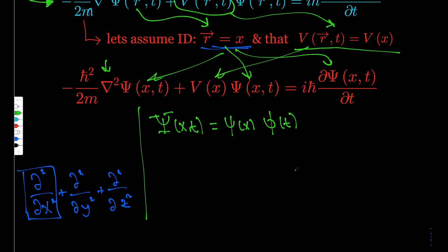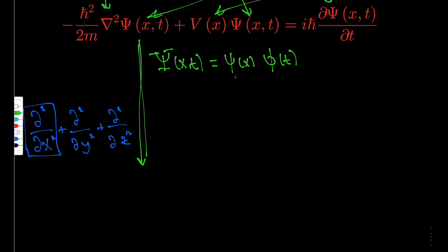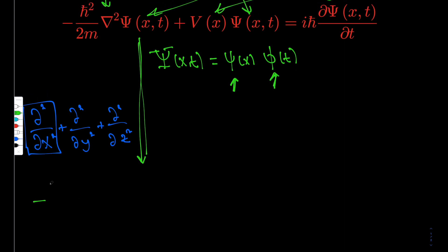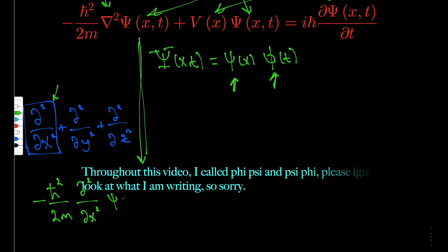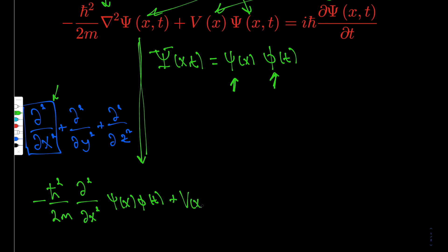Don't worry — I'm going to go very slowly on this. A lot of people who take this class have not done partial differential equations, and it's not so complicated; it will make sense. So I'm going to take this substitution, go down to the bottom, and substitute it in. I'll drop the function notation — psi is a function of x, phi is a function of t. So we have: minus h-bar squared over 2m, and since we only have the x-coordinate, it's ∂²/∂x² — and we substitute the product form.